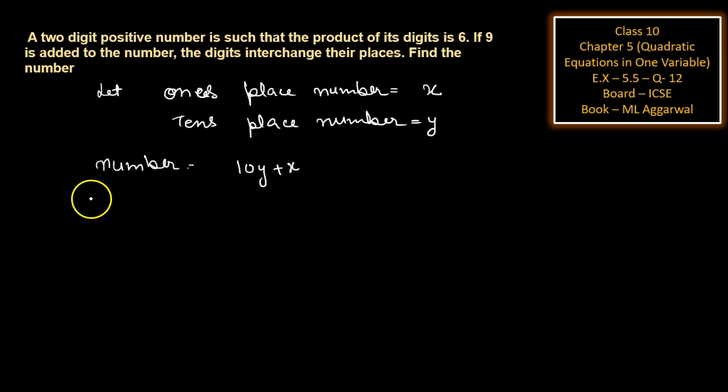Now this says that if 9 is added to the number, then the digits interchange their places. Find the number.